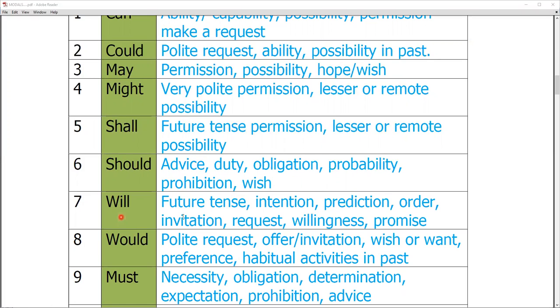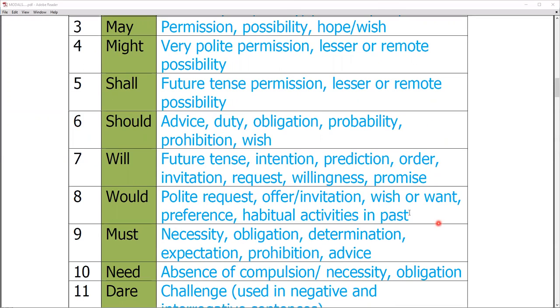Will is used for future tense, just like shall. Intention, prediction, order, invitation, request, willingness, and promises. All of these for what we will use will.